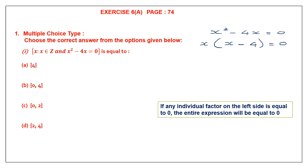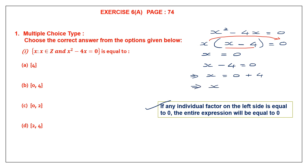If any one of these factors is equal to 0, then let's take the first one: X is equal to 0. Then I'm going to take the second factor, so X minus 4 is also equal to 0. Now I can solve for X: X equals 0 plus 4, so X equals 4. I have got two elements — X is 0 and X is 4. So my set elements are 0 and 4, which is option B. So B is our answer.